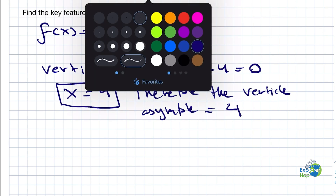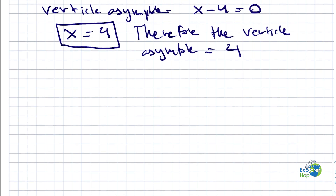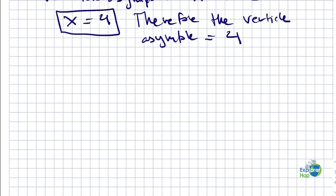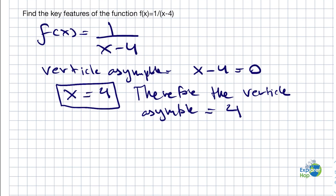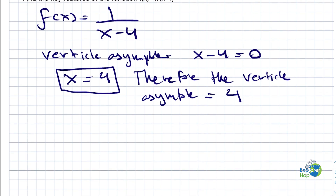Now let's try to solve for the horizontal asymptote. To find the horizontal asymptote, we need to look at the degree of the numerator and the denominator — specifically the highest degree — which in this case is 0 in the numerator and 1 in the denominator.